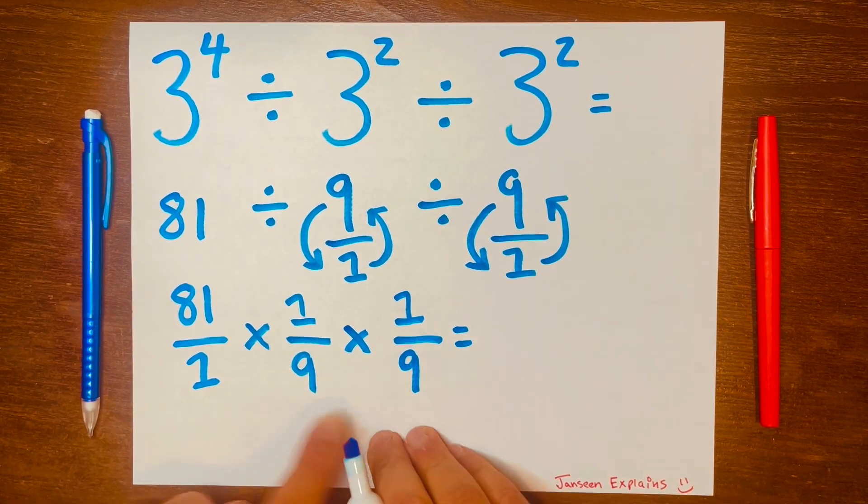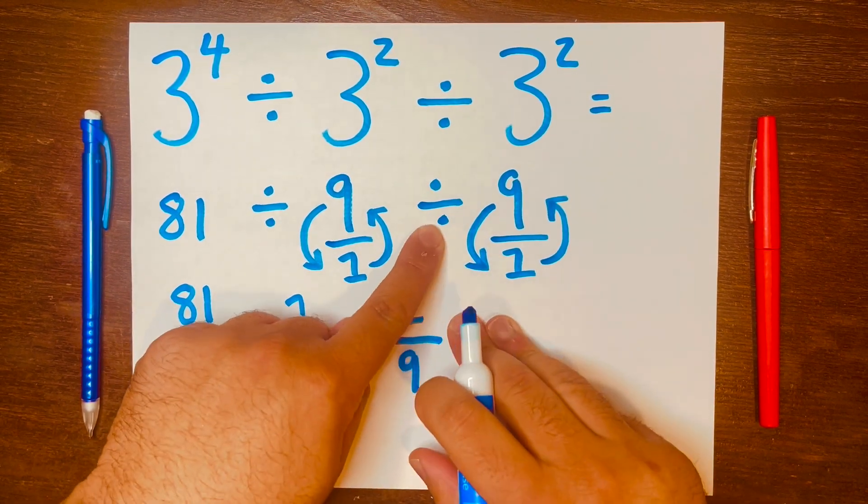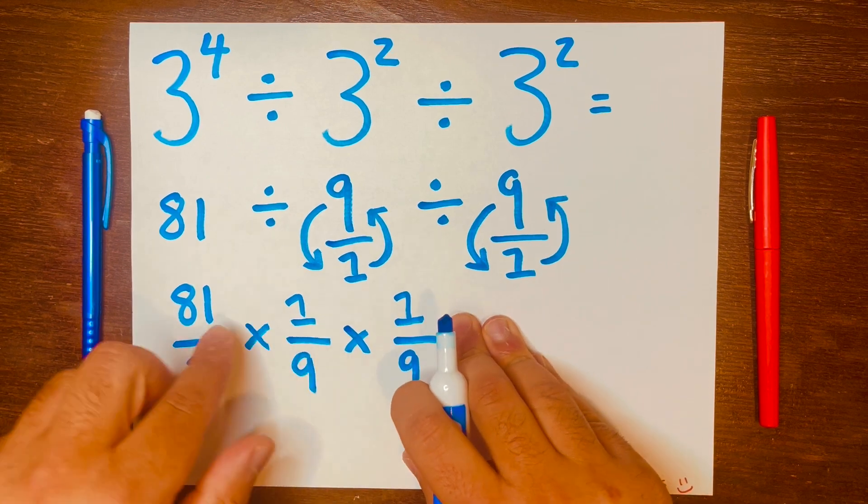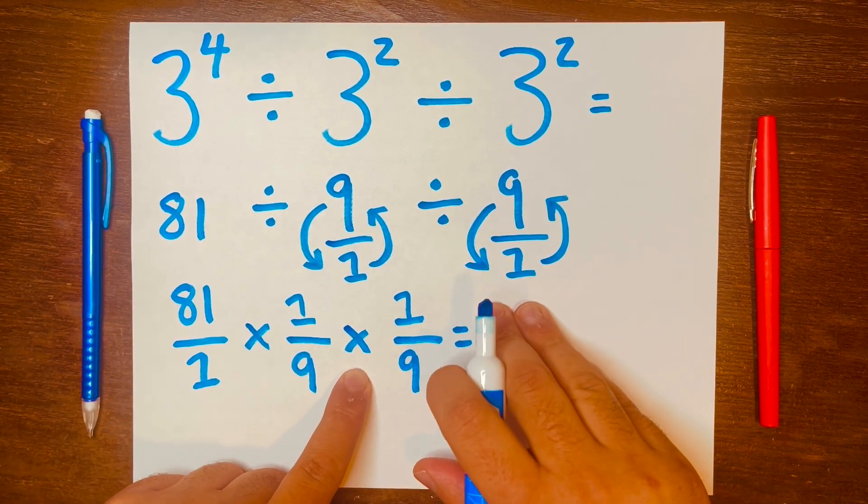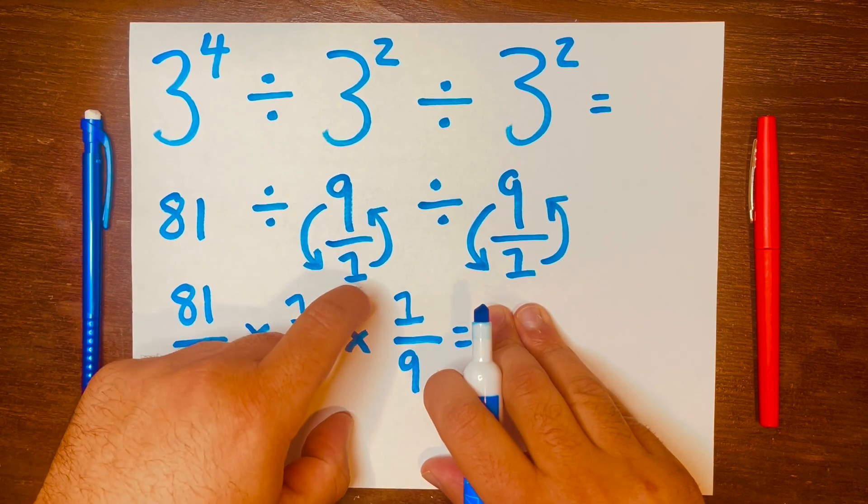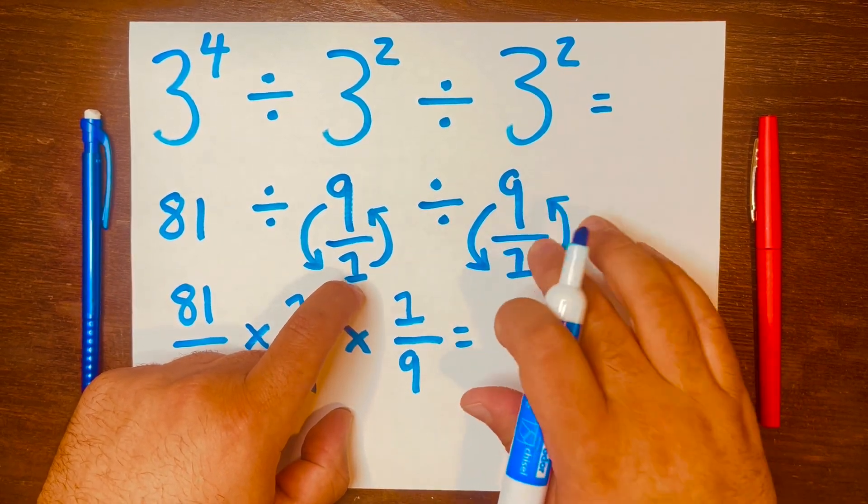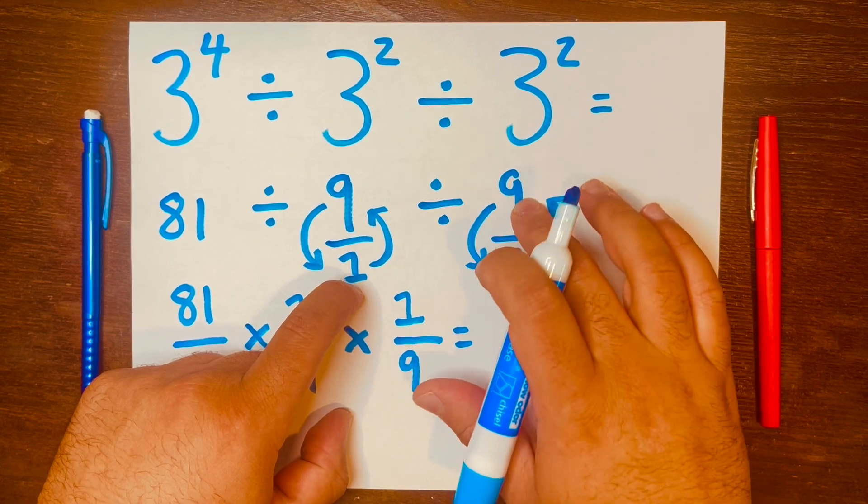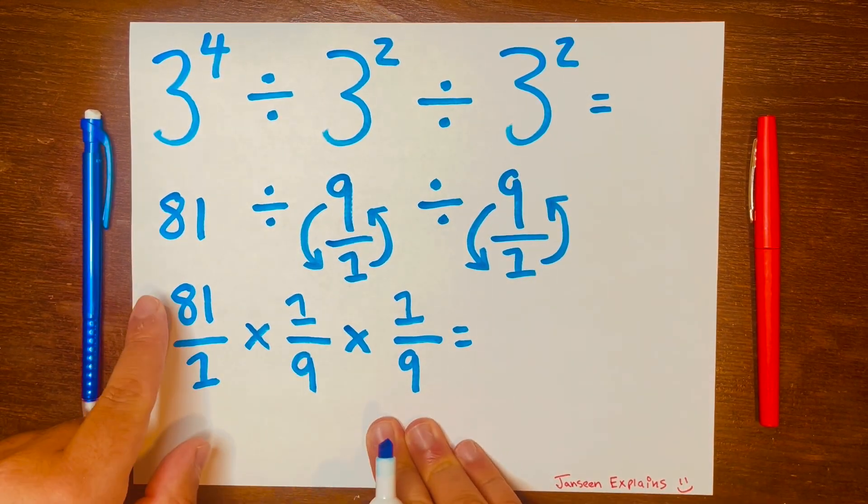And you're probably thinking, why did I change this symbol? Well, it's because after we get this answer, we're going to have to use that same method, keep-change-flip. So we'll keep that same answer, then we change the division symbol to multiplication, then we flip this nine that became a fraction.